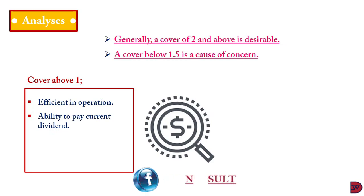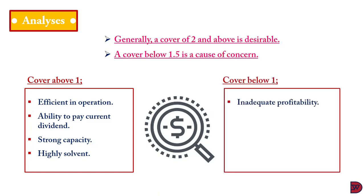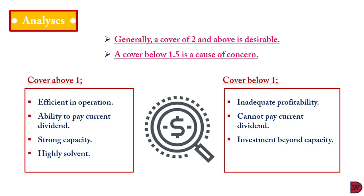A high cover also means the business can pay its current dividend and has the capacity to engage funds collected from equity holders and generate sufficient profit. Lastly, the business is highly solvent with potential to exist in the foreseeable future. If the cover is below one, it indicates reduced profitability and the business cannot pay out dividend since profit must be generated first. It may also mean the business received more funds than it has the capacity to invest productively. This should not be analyzed in isolation but examined as a trend over time.